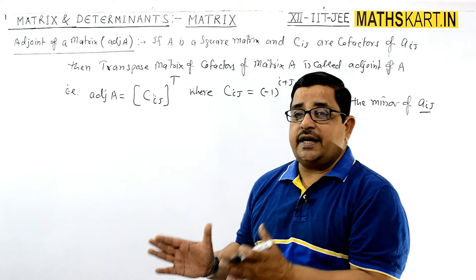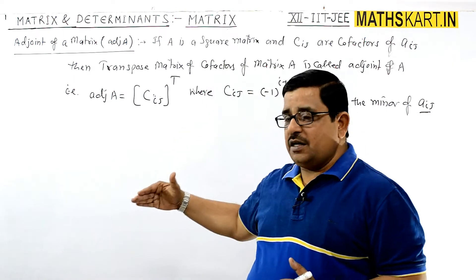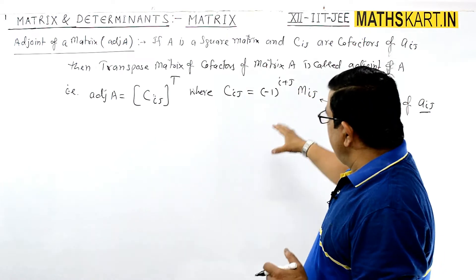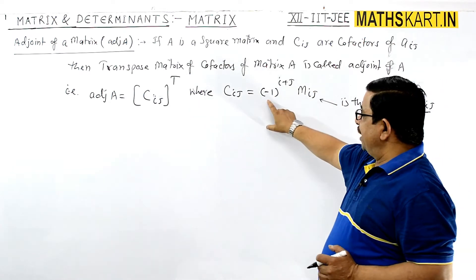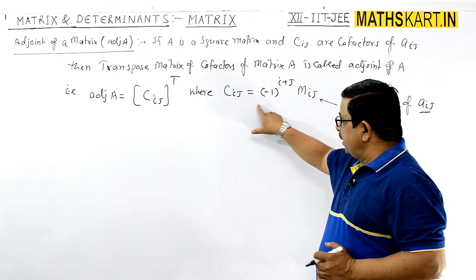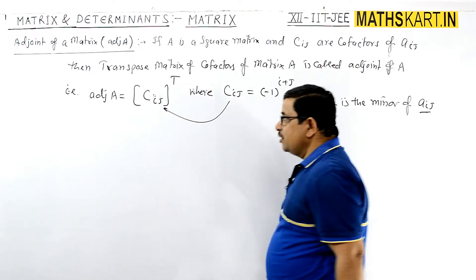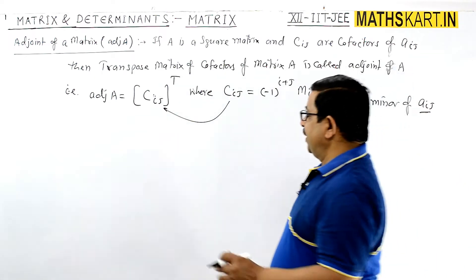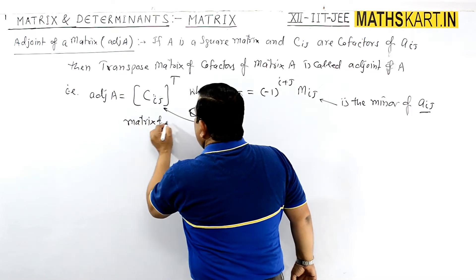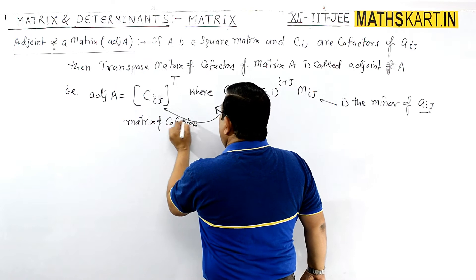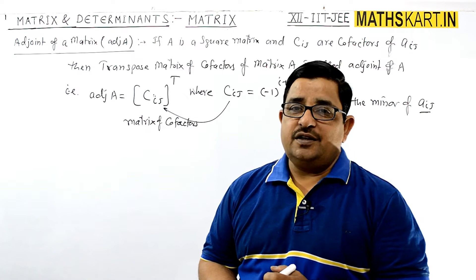For each element there is a minor, so we will work it out to see how to find the minor. We will take one example directly so that it will be clear how for each element you can find out the minor, multiply by (-1)^(i+j) to get the cofactor, place each cofactor in the matrix of cofactors, and then take the transpose of that matrix to find the adjoint.